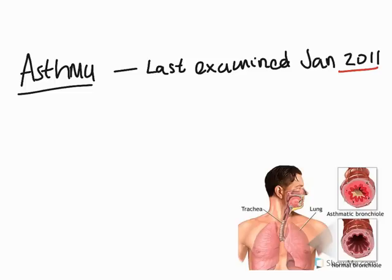Good afternoon. It is Monday the 7th of January 2013. We're going to do a session today on asthma as part of anatomy and physiology. We're doing this on the basis that it hasn't been examined for a little while, much like the other topics we've looked at. In fact, the only time this question appeared was in January 2011 as part of a 10-mark question. We're considering this topic might come up as a shorter answer question in your exam, and it's one that many students get tripped up by.